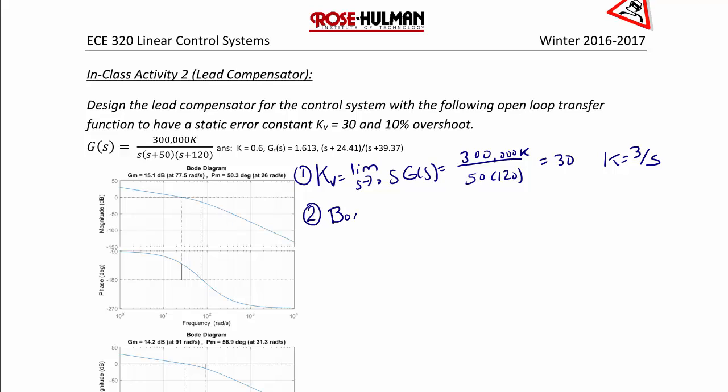For step two, we create the Bode plot for the open loop transfer function using K equal three-fifths. For step three, we look at the Bode plot to find the phase margin. And we see that the uncompensated phase margin is 50 degrees at omega C G C equal 26 radians per second.